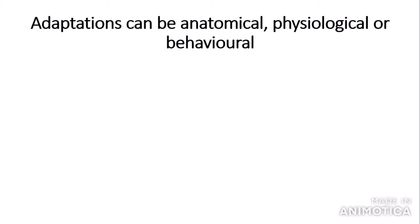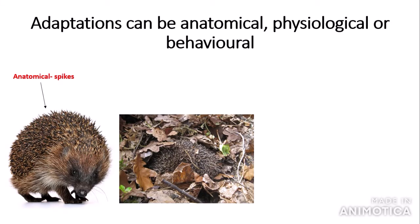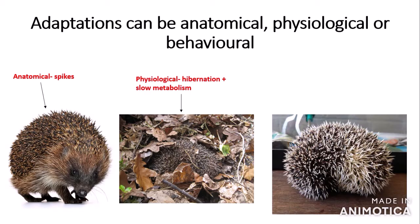Adaptations, such as the long neck in the giraffe, can be anatomical, physiological, or behavioural. Using the example of hedgehogs: an anatomical adaptation is the fact that hedgehogs have spikes to deter predators. A physiological adaptation is that hedgehogs go into hibernation during winter months and slow their metabolic rate down, enabling them to survive long, harsh winters. A behavioural adaptation is that hedgehogs sometimes roll up in a ball when they're in danger.